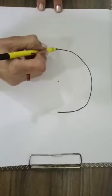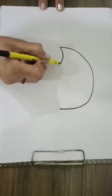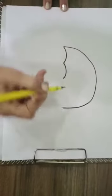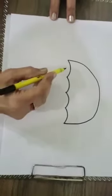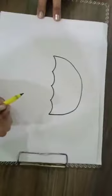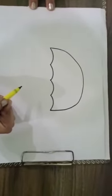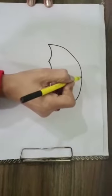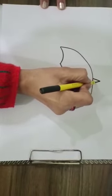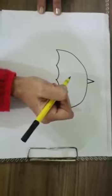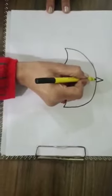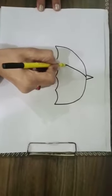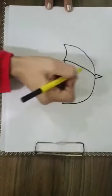ek dot laga luge, and then one curve, two curves, then one and two. Ye aap ne four curves bana liye, okay? After that, on the top of the semi-circle we will make a thin triangle like this, okay? And from center we will make a bit curved line, bilkul straight nahi karenge. What is it? Curved.